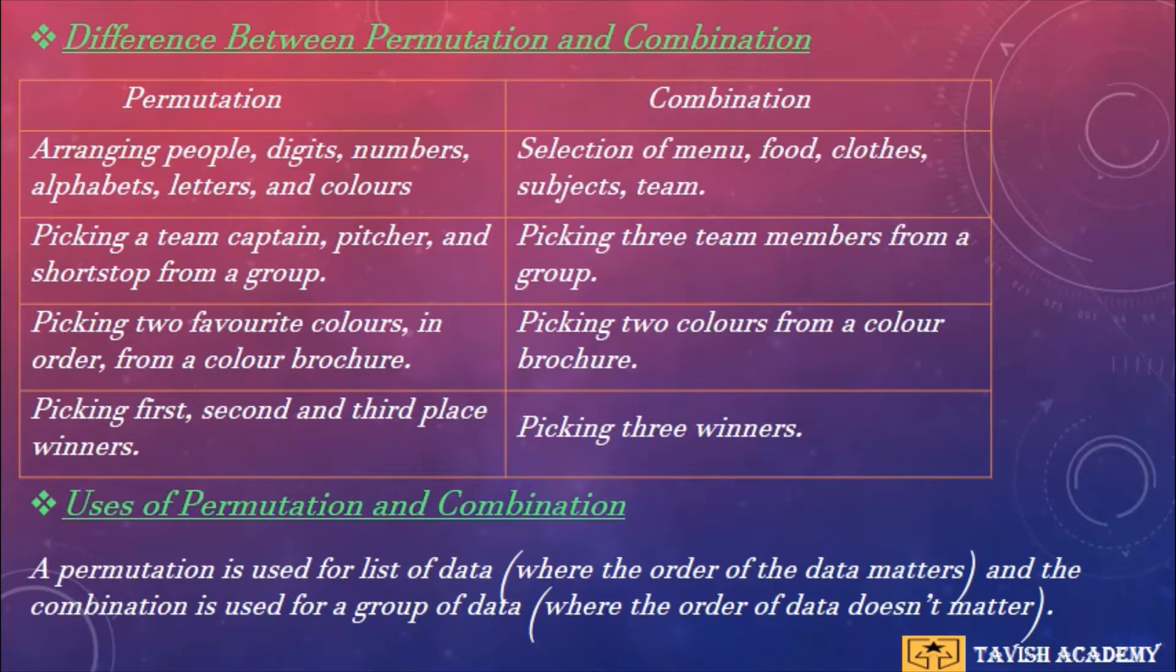First, permutation: arranging people, digits, numbers, alphabets, letters, and colors. Combination: selection of menu, food, clothes, subjects, team. Permutation: picking a team captain, pitcher, and shortstop from a group. Combination: